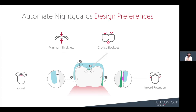Crevice blockout is not to be confused with blockout relative to path of insertion. This is blockout applied in the central groove or central fossa, and also interproximally. It's an awesome feature that allows for easy seating on first time. When you dial these preferences in, you should be able to print, post-process your Nightguard, and fit it to your model with little to no internal fit adjustments.